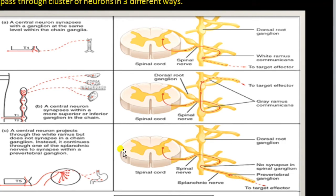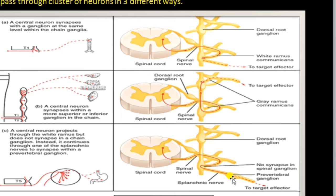In the third pathway, the preganglionic neuron passes through the white ramus communicants and through the sympathetic chain ganglion without forming any synapse there. Instead, it goes along the splanchnic nerve and forms a synapse in the collateral ganglia, which are close to the organs. When a synapse is formed in the collateral ganglia, the postganglionic neuron is short.